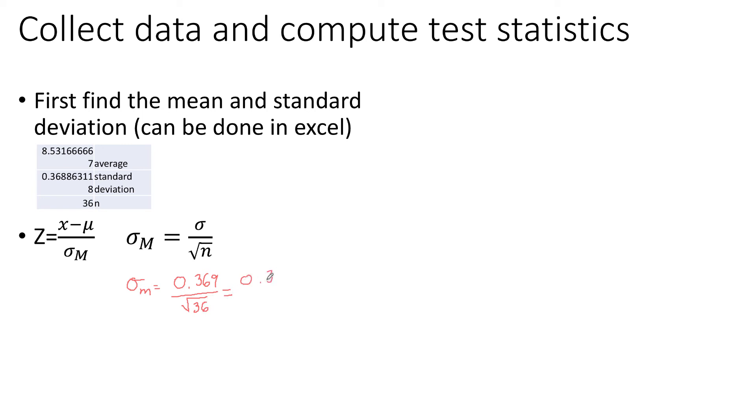In this case, the sample size is a nice even square, resulting in 6. And when we do the division, I'm going to round this to three decimal places, 0.062.